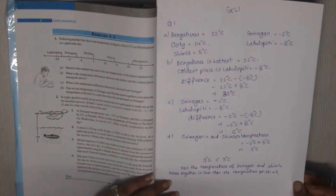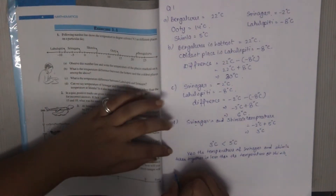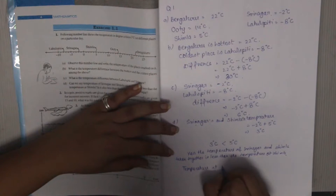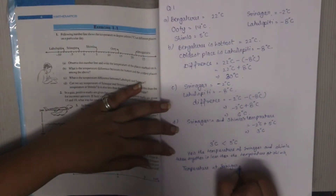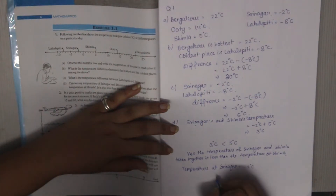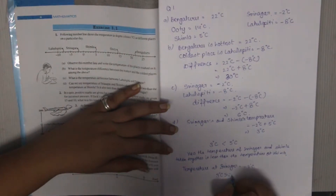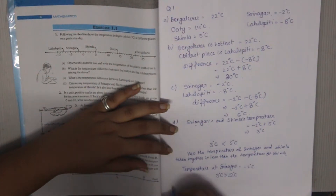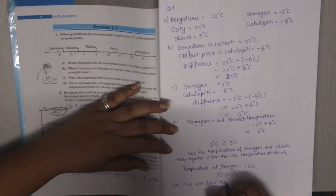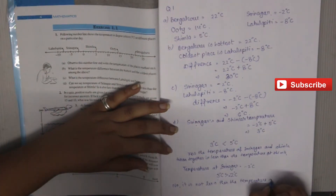Part D second part: Is it also less than the temperature at Srinagar? The temperature at Srinagar is minus 2 degree Celsius. We compare: minus 2 is less than 3 degree Celsius. So 3 degree Celsius is greater than minus 2 degree Celsius. Therefore the answer is no, it is not less than the temperature of Srinagar.